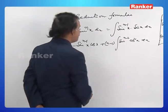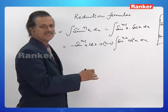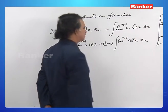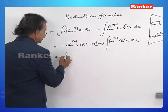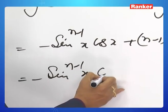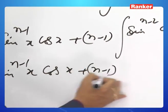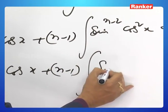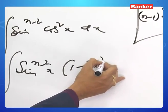Why has this become plus? In the formula it is minus, and in the product another minus is also there — two minuses give a plus. So this is minus sin^(n-1)x·cos x plus (n-1) into the integral, and cos²x can be written as 1 minus sin²x.